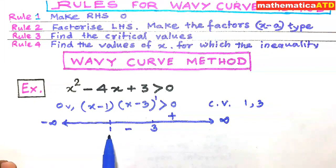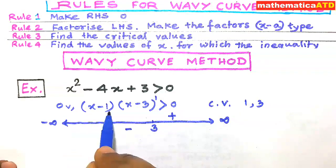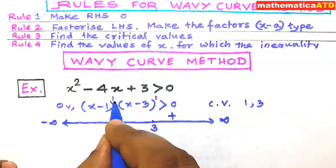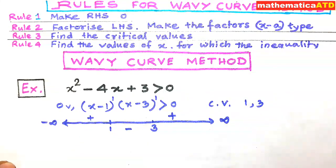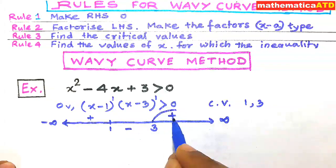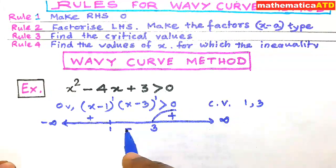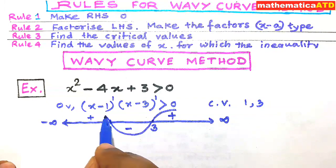The next critical point is 1, and the factor is (x - 1) with power 1, which is also an odd number, so we again change the sign. The previous sign was negative, so now it becomes positive. We can draw a graph of this form — the curve is above the line in the positive regions and below in the negative region, going from negative infinity to 1.